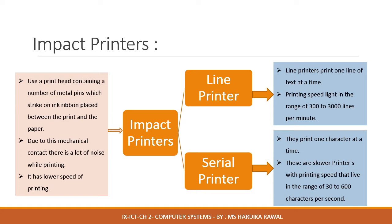The line printer prints one line of text at a time. The printing speed lies in the range of 300 to 3000 lines per minute. These are generally used when there is a heavy load of printing to be done. The serial printer prints one character at a time. These are slower printers with a printing speed in the range of 30 to 600 characters per second.